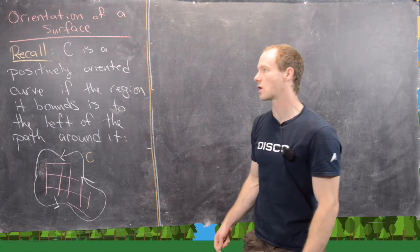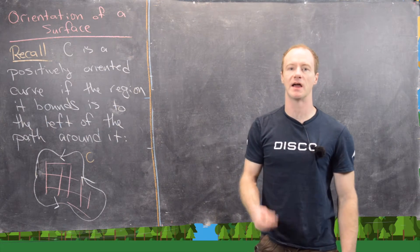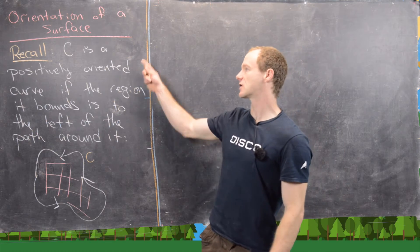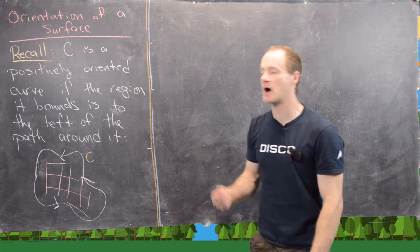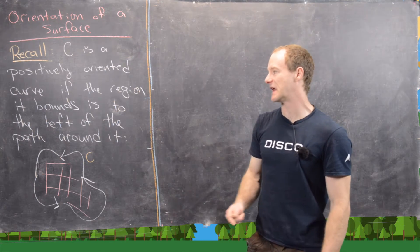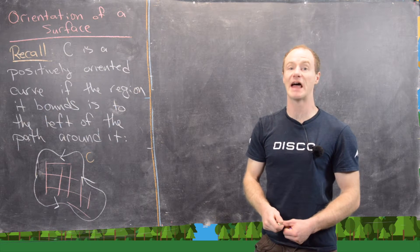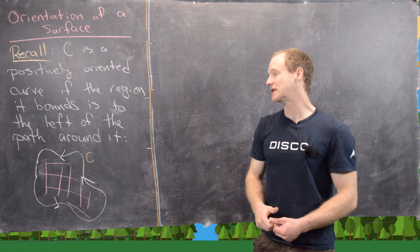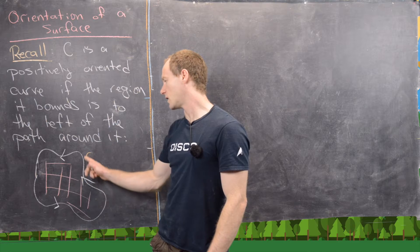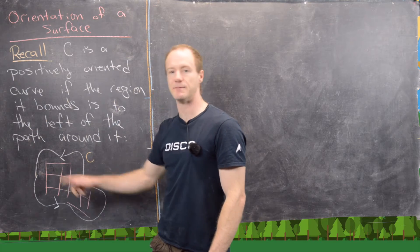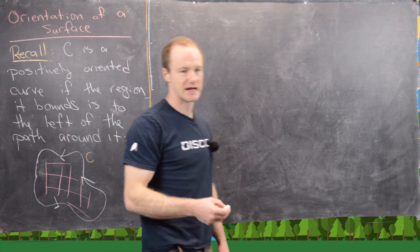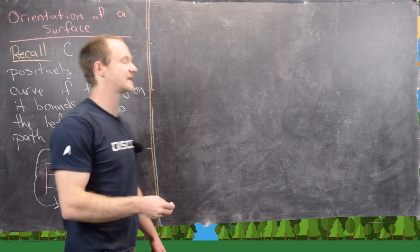Before we get started, let's recall what we mean by the orientation of a curve. We say that a curve C is positively oriented if the region that it bounds is to the left as you walk around it. So if we're walking along this curve, the region that it bounds is to the left.